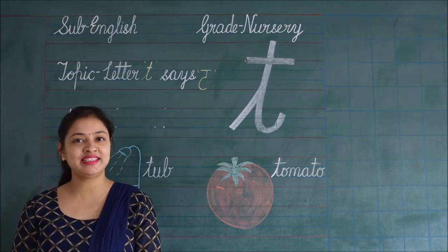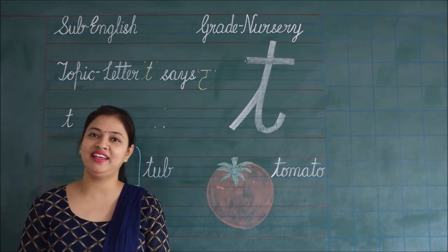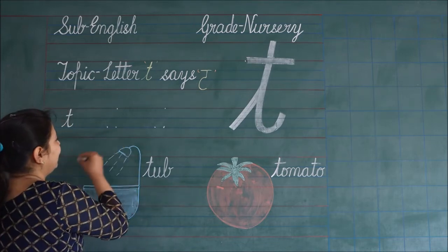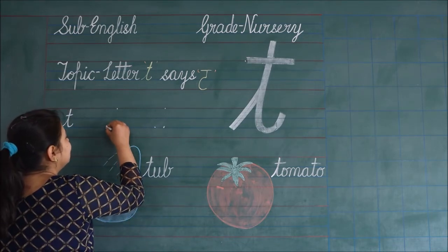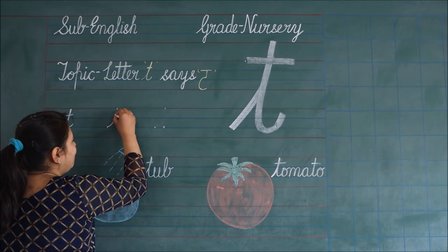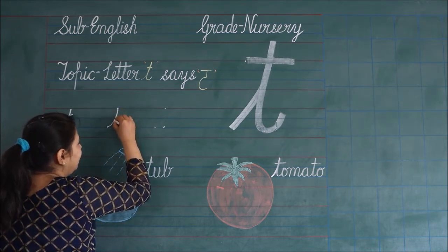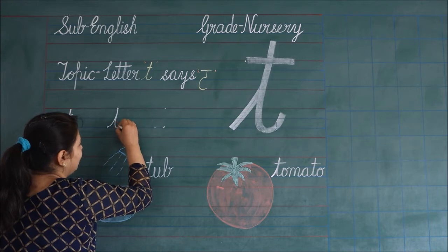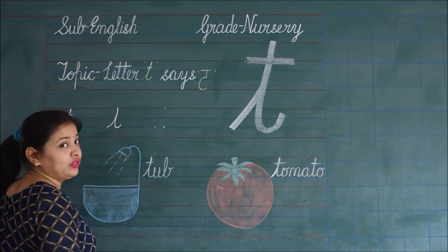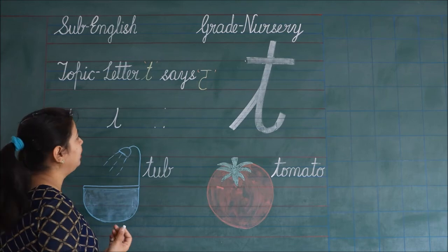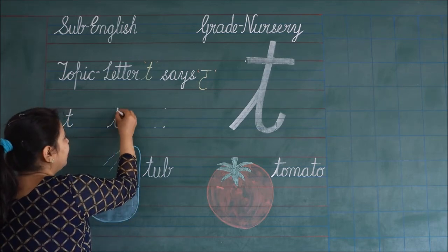Students, let's learn how to write letter T. Students, keep your pencil on third line dot and make a slanting line to the first line dot. Then make a slightly slanting line to the third line dot. And then, make a curve. And students, make a slipping line mid to the first and second line.